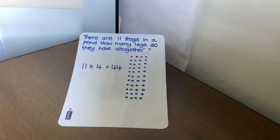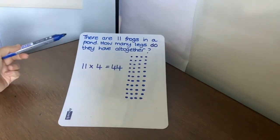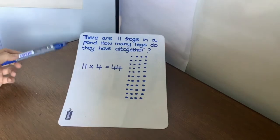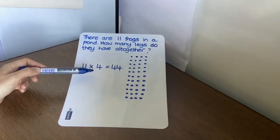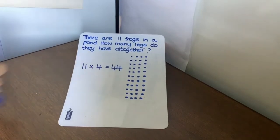Is this what yours look like? So we know that there are 11 frogs or 11 groups. And each frog has 4 legs. So there are 4 items. So we're doing 11 multiplied by 4 equals 44. So the factor, factor and product.